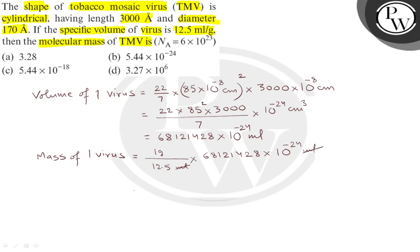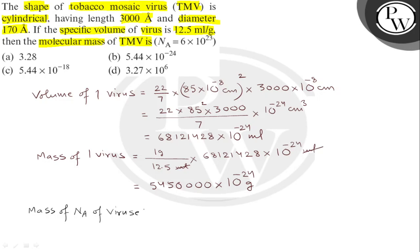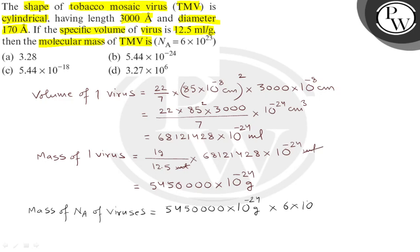So the mass of one virus must be 5.45000 into 10 raise to minus 24 grams. Now, to get the molecular mass, we multiply by Avogadro's number, 6 into 10 raise to 23. Solving this, 10 raise to minus 24 and 10 raise to 23 cancel, leaving 10 raise to minus 1.